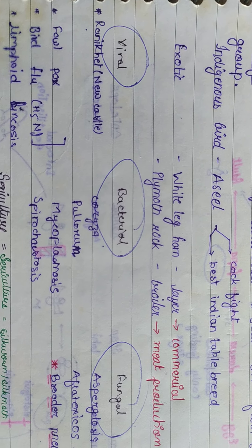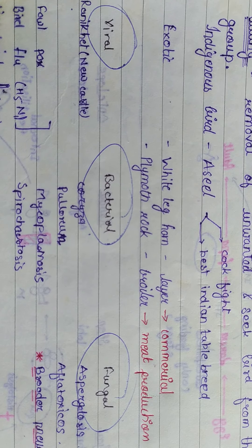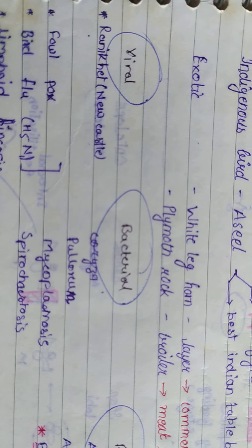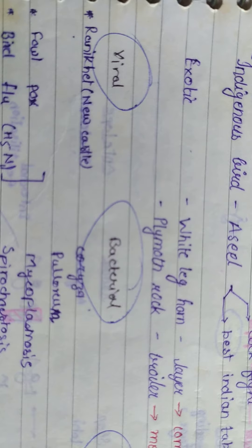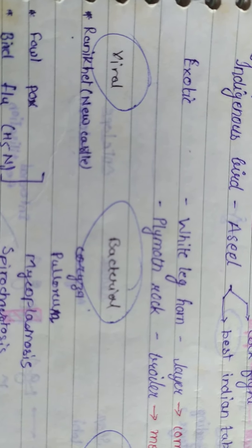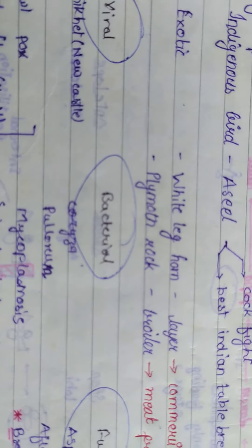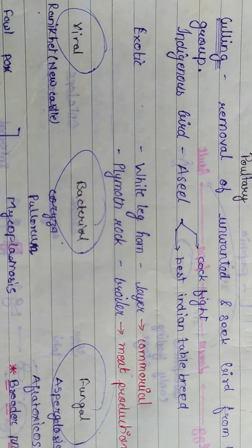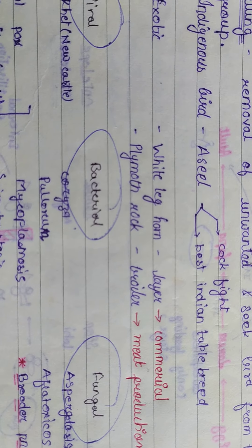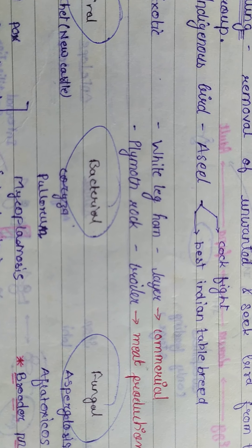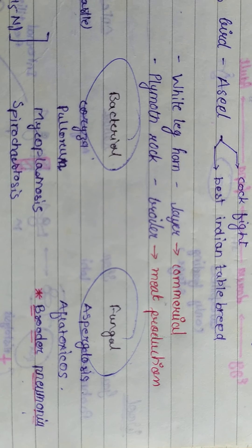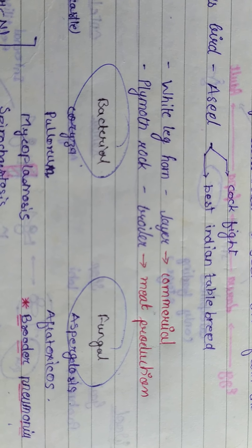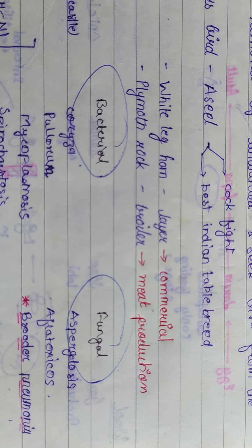Diseases of birds are classified into viral, bacterial, and fungal categories. Ranikhet, also known as Newcastle disease, is a well-known viral disease. Bacterial diseases include Coryza and Pullorum, while fungal diseases include Aspergillosis and Aflatoxicosis.